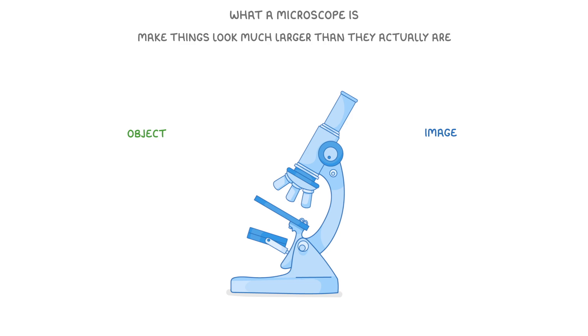In microscopy, the term object refers to the real object or the sample that you're looking at. So if we had some onion cells on our microscope slide, then these cells themselves would be the object.